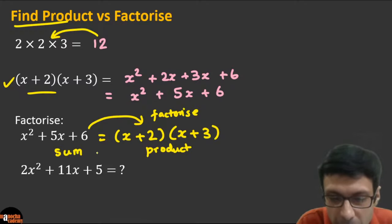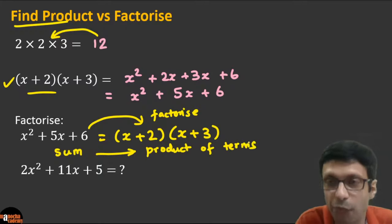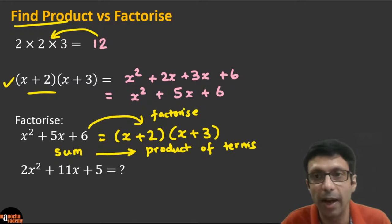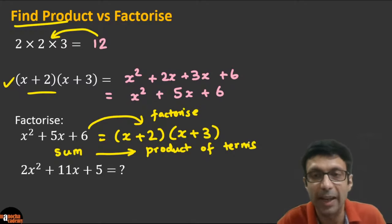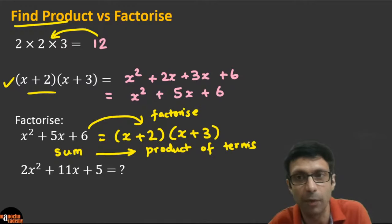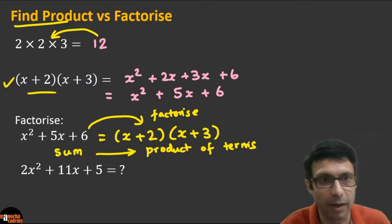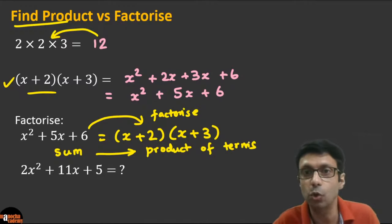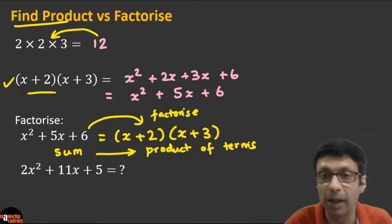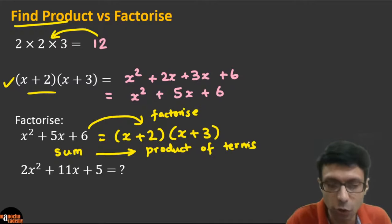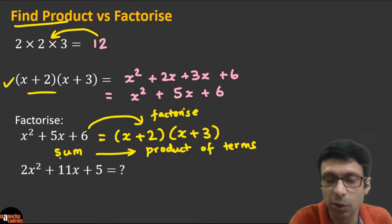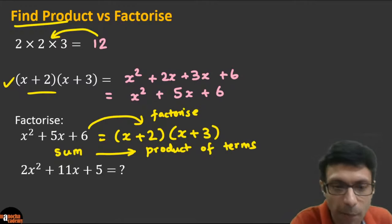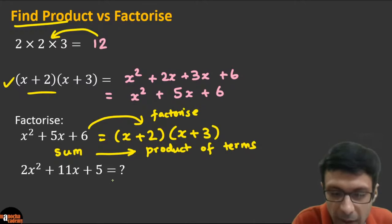That is the meaning of factorization: we go from a sum of terms to a product of terms. We are simplifying x² + 5x + 6 into simpler terms and a product. Now, how do you factorize 2x² + 11x + 5? That's exactly what we're going to learn — which technique to use.